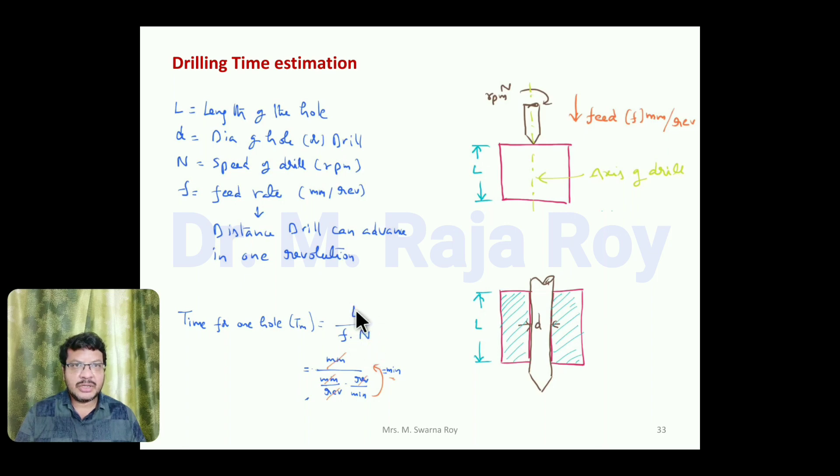If you substitute all the dimensions—L in mm, feed in mm per revolution, speed N in revolutions per minute—then if you cancel all these things, revolutions and mm will cancel, and finally you will get the unit as minutes.